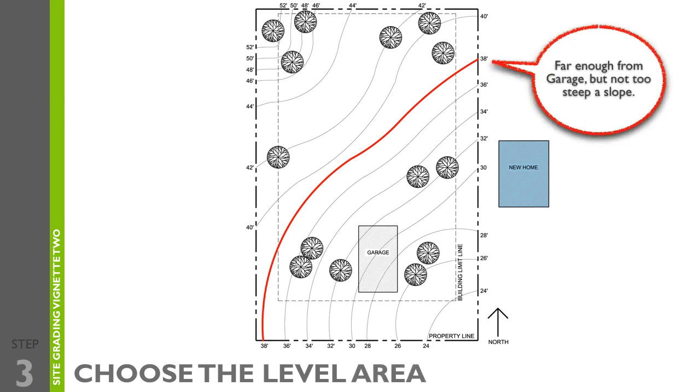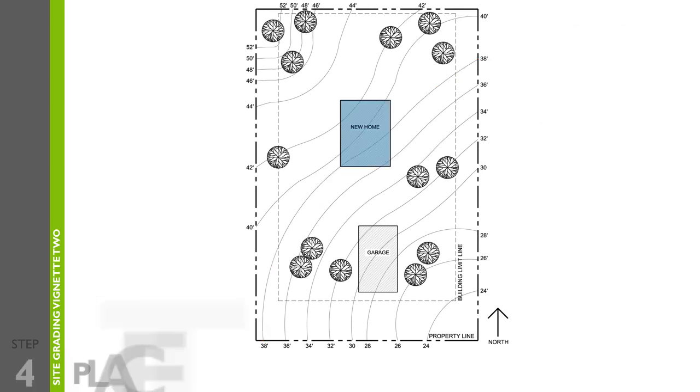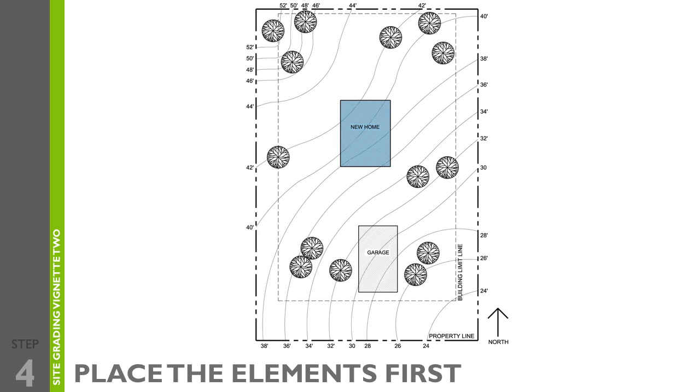As you can see here, the contour line at 38 feet would be a good location for the new home, as it is far enough away from the garage but not too steep of a slope. Step number four is to place the element on the site.